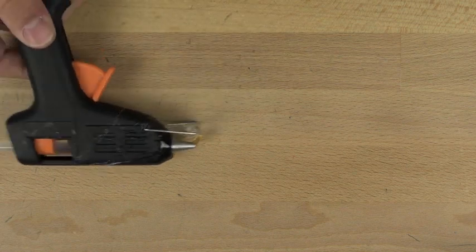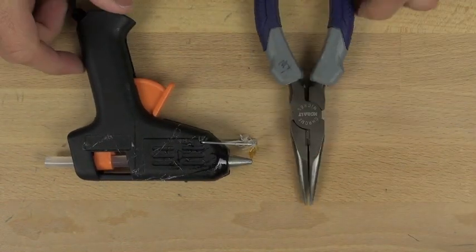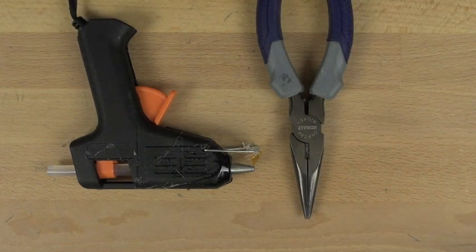Okay, so now we're going to talk about the tools that you need to make this project work. You're going to need a hot glue gun, and any standard one will do, and a needle nose pliers to crimp the wires together.